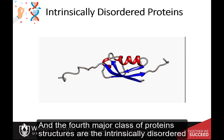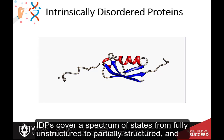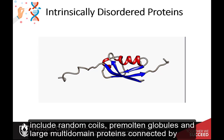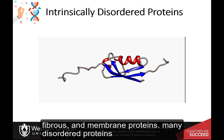The fourth major class of protein structures are the intrinsically disordered proteins, or IDPs. An IDP is a protein that lacks a fixed or ordered three-dimensional structure. IDPs cover a spectrum of states from fully unstructured to partially structured and include random coils, pre-molten globules, and large multi-domain proteins connected by flexible linkers. They constitute one of the main types of proteins alongside the globular, fibrous, and membrane proteins.